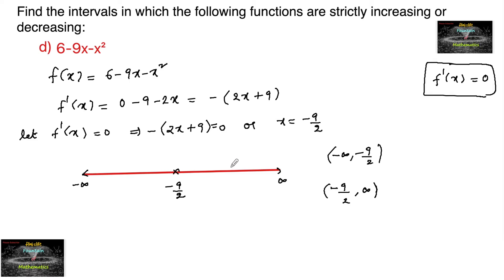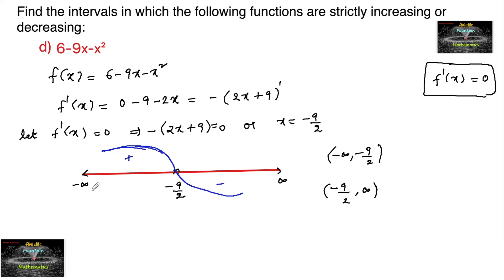By using the wave curve method, since the power is odd, we can start taking the curve. Since f'(x) = negative of (2x + 9), let's start from the negative side, because for any value above -9/2, the function will be negative. So this is negative on the right and positive on the left. In the interval minus infinity to -9/2, it is increasing, and in the interval -9/2 to infinity, it is decreasing.